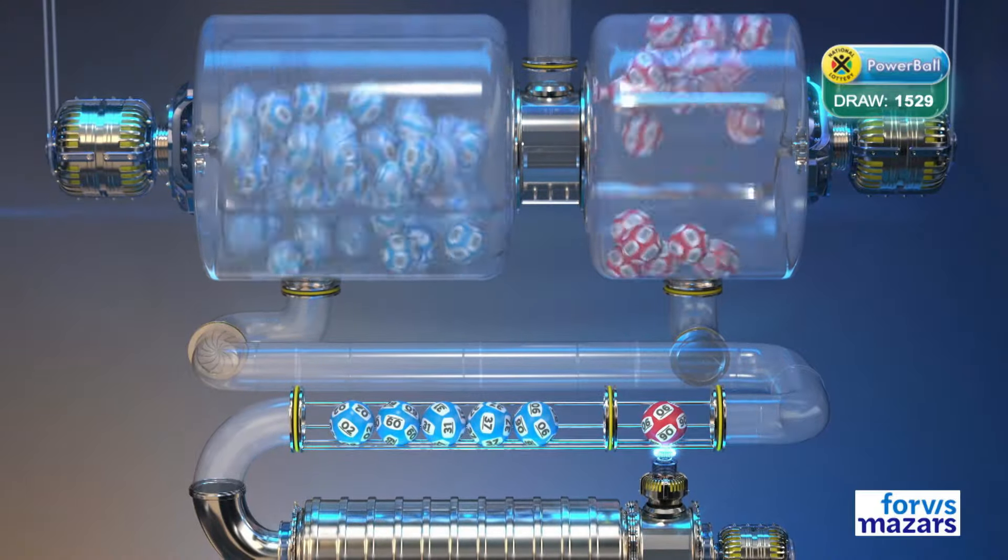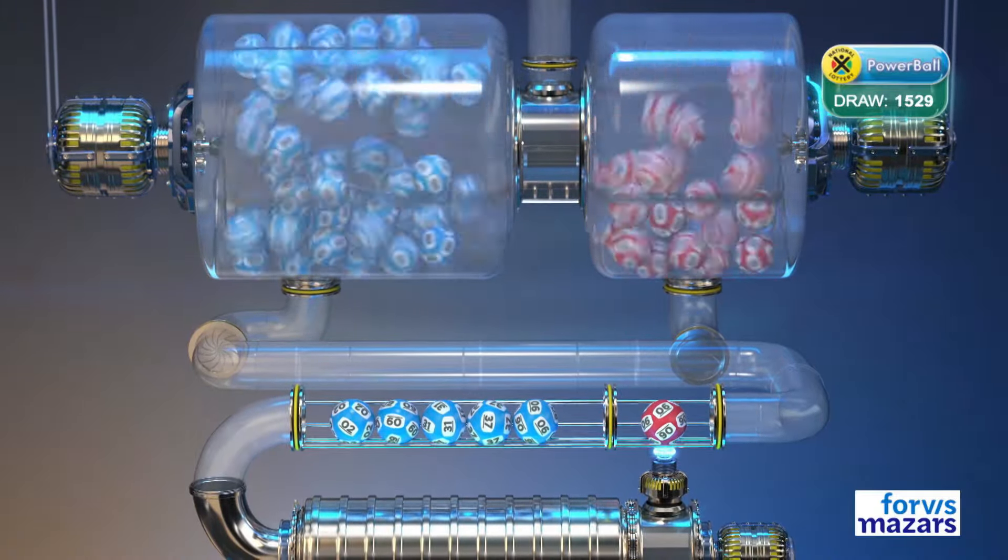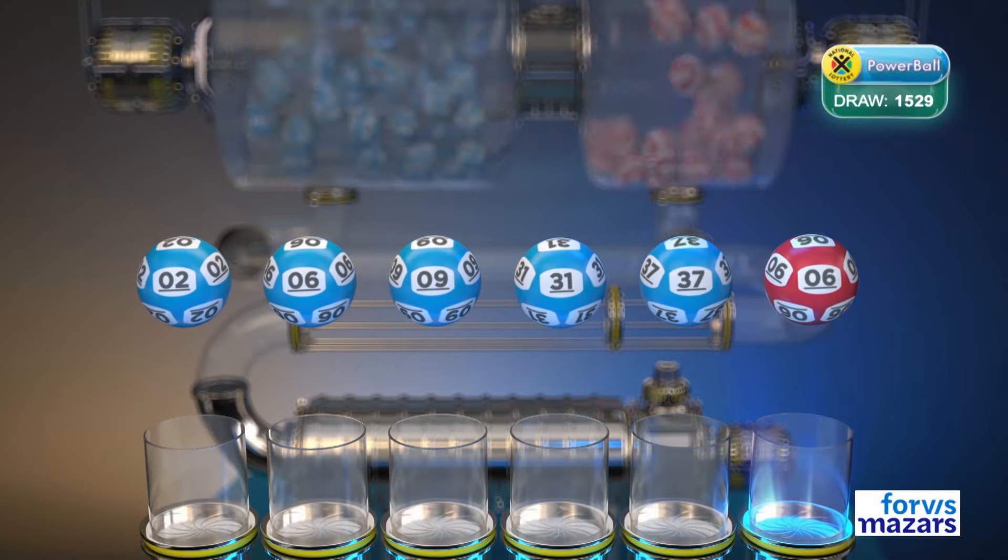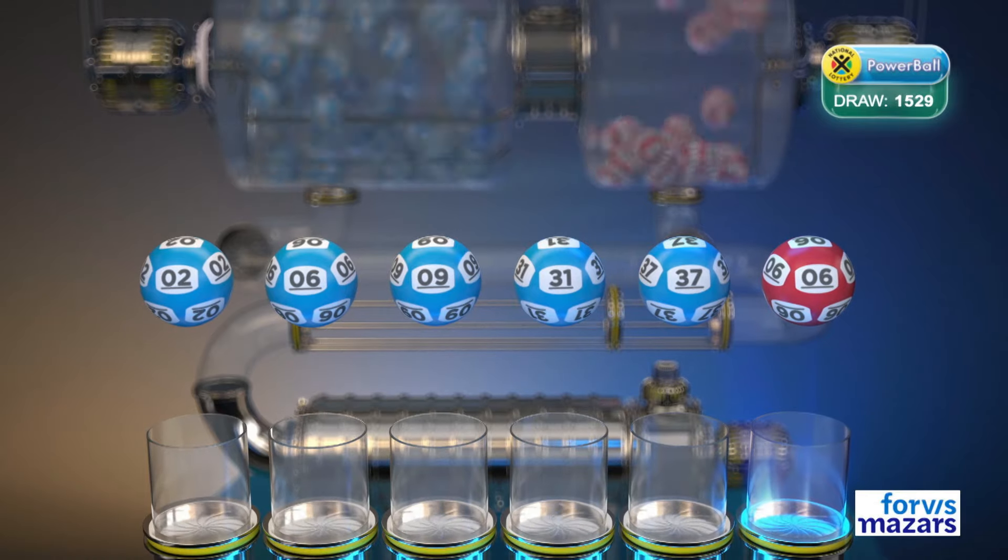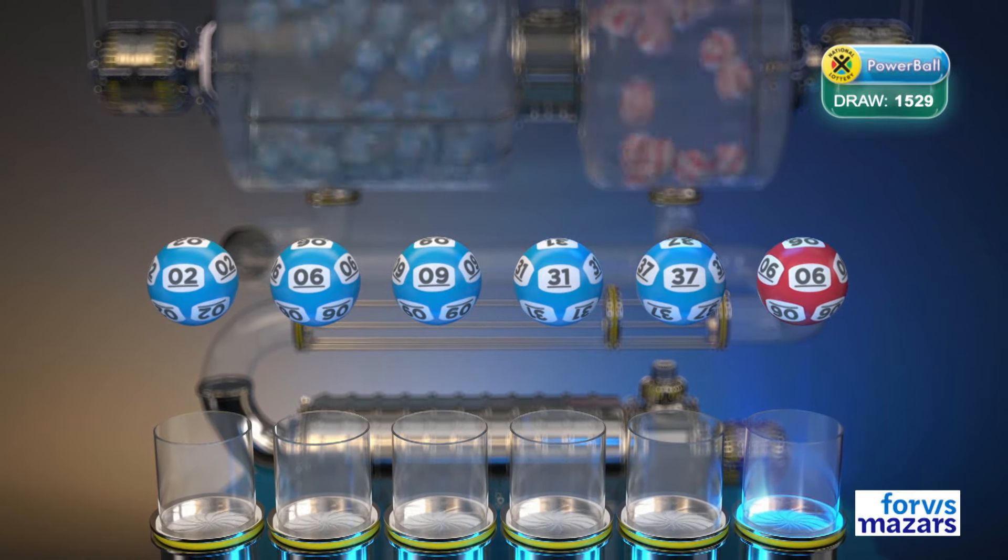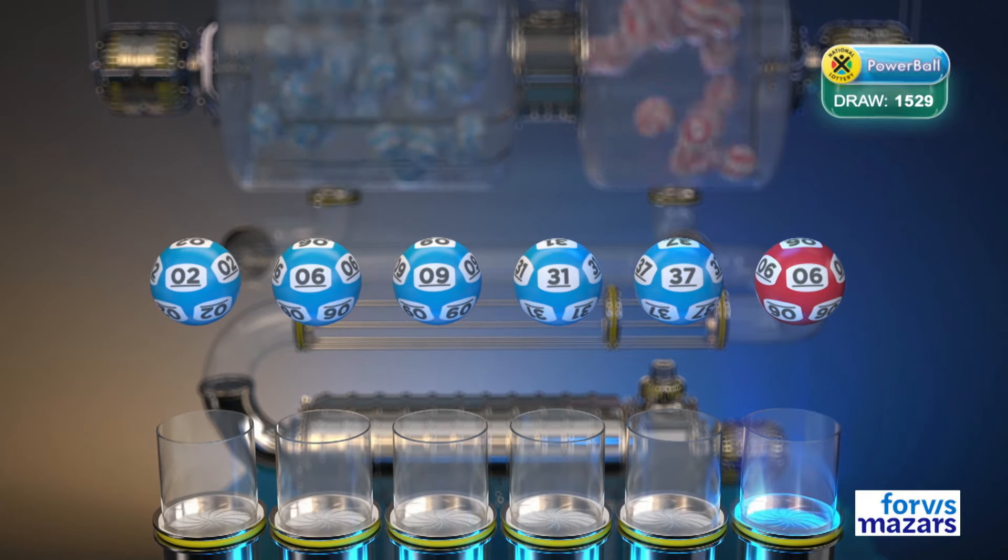And the Powerball is six. Let's recap these numbers in numerical order: Two, Six, Nine, Thirty-one, Thirty-seven. And the Powerball is six.